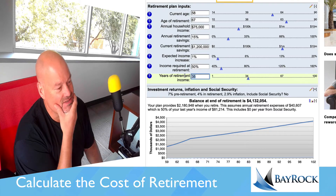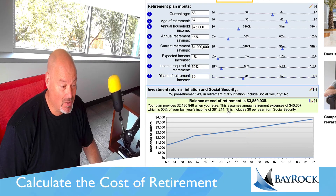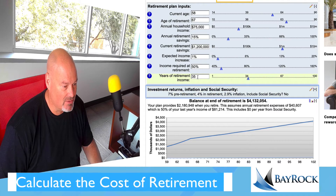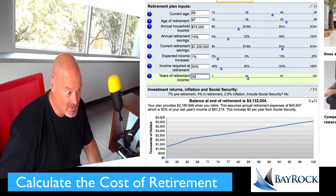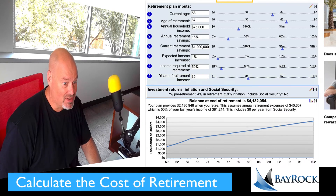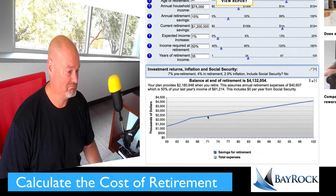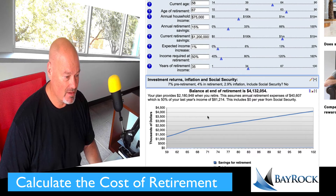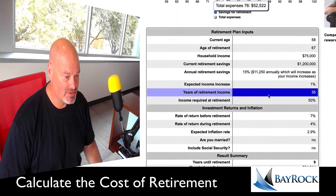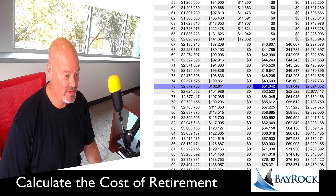If I have $1.2 million and I'm only going to need 30 years of retirement income when I retire at 67, that means my kids are going to get $3 million. I went from 35 down to 30 years. That gives me a balance of about $4.1 million — pretty good. Now I'm going to view the report.